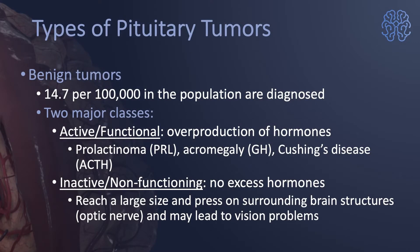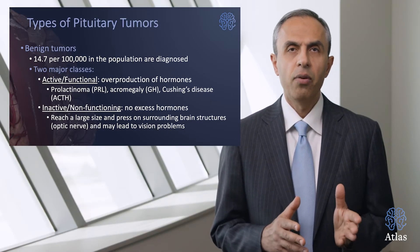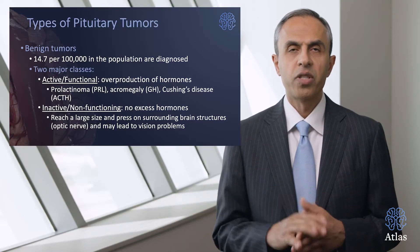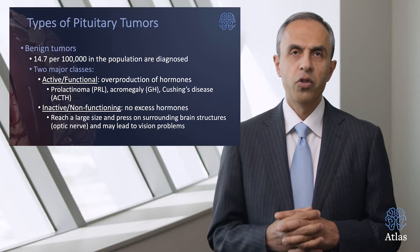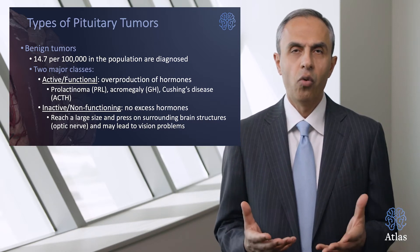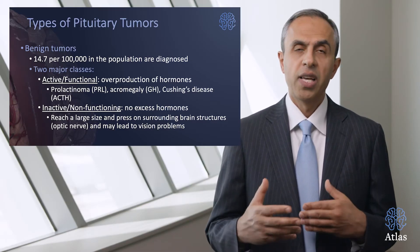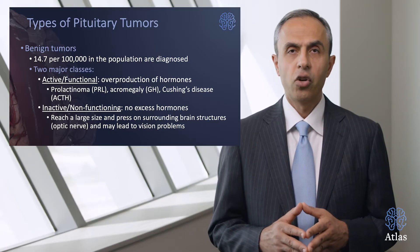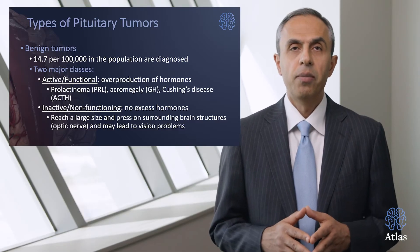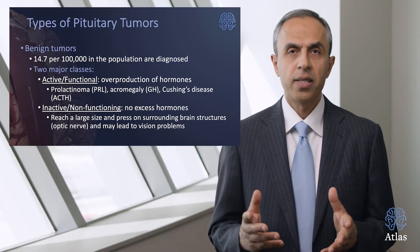What are the types of pituitary tumors? This is a critical piece of information. These benign tumors occur in about 15 people per 100,000 in the population and are typically diagnosed in two forms. Type one — active and functional tumors — are diagnosed based on overproduction of their hormones. They can be called prolactinomas because they overproduce prolactin, cause acromegaly due to overproduction of growth hormone, or Cushing's disease due to excess adrenocorticotropic hormone.